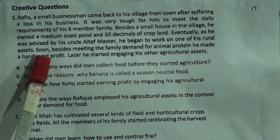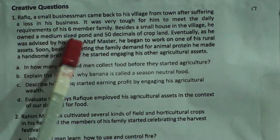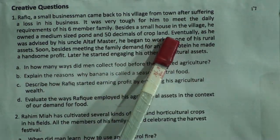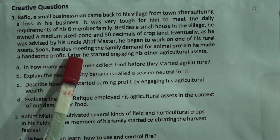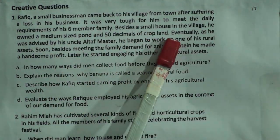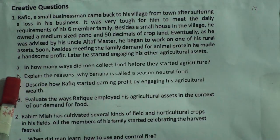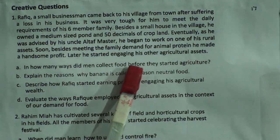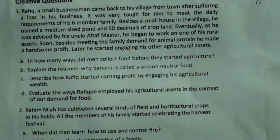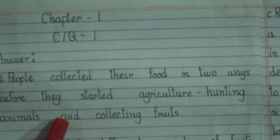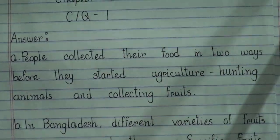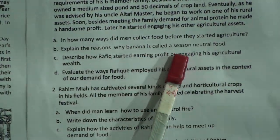Rafiq is suffering from want with his six-member family. He has a pond and 50 decimals of cropland. With the advice of his uncle, he began to use his rural assets. Question (a): In how many ways did people collect food before they started agriculture? Answer: People collected their food in two ways — hunting animals and collecting fruits.